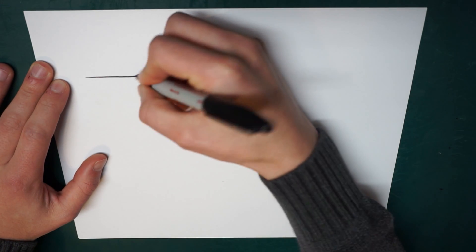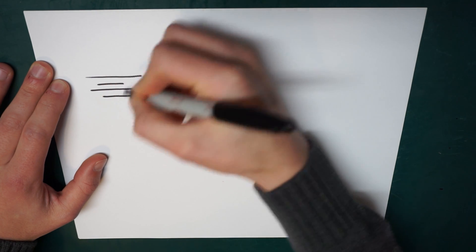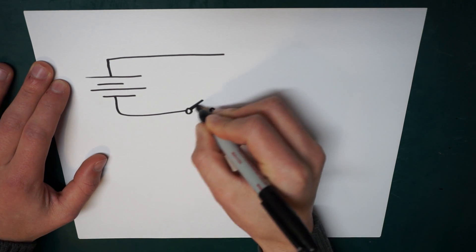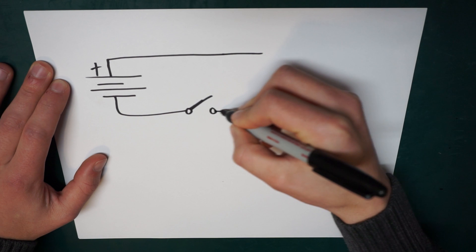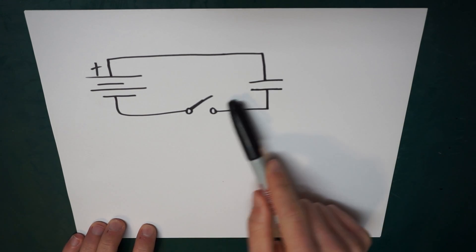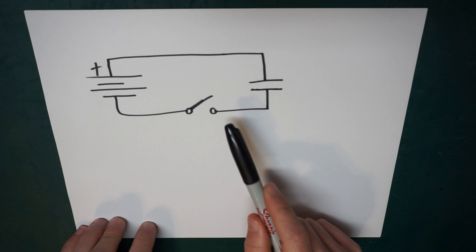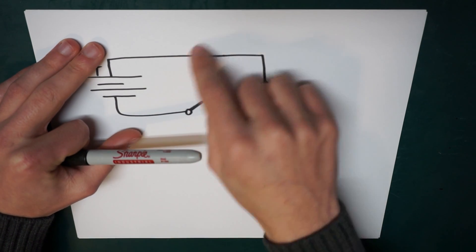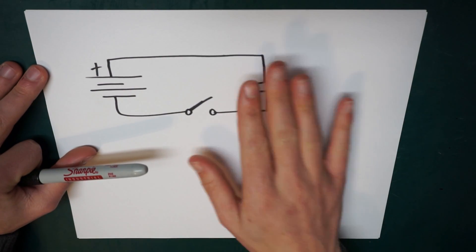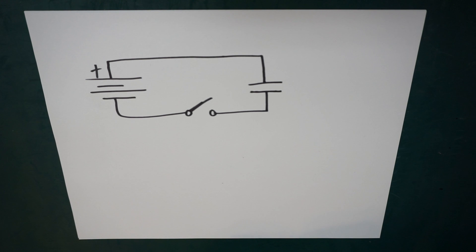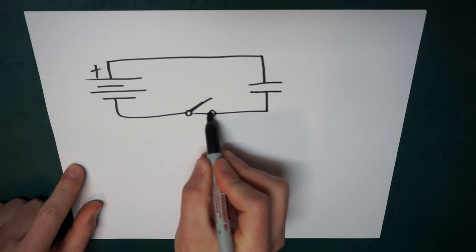To start, let's go ahead and analyze one of the simplest circuits we can possibly have. I'm just going to draw a battery, a little switch, and a capacitor. Let's think about what's going to happen in this circuit. Right now, no current is going to flow because this switch is open, so there's no way current can flow at all. The capacitor, we'll assume, is fully discharged. And what I want to do is analyze what's going to happen the instant, the very second this switch closes.